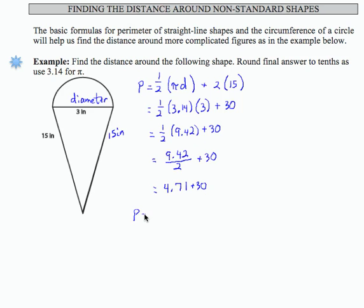And that gives me a final result of 34.71. And I'm going to go ahead and call it perimeter even though it's really a combination of perimeter and circumference. And I was asked to round to tenths as needed.